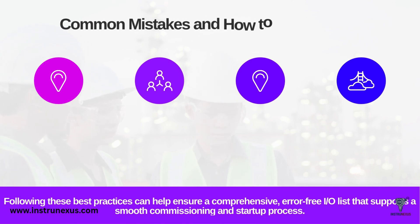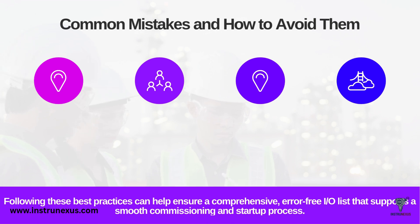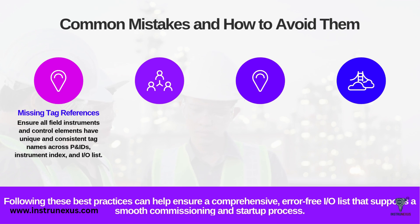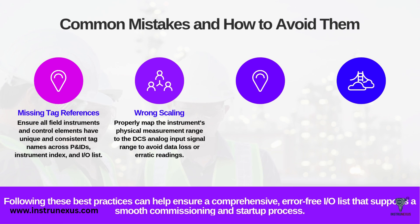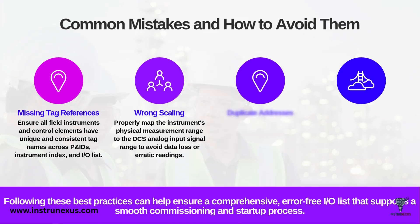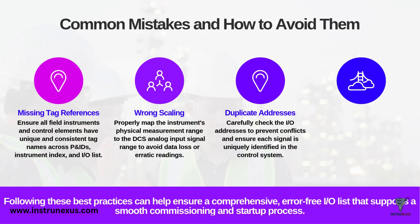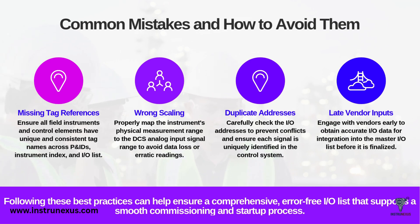Preparing an IO List is a detailed process and several common mistakes can cause major problems down the line. First, missing tag references: a tag exists on the P&ID but is missing from the IO List, or vice versa. The only way to avoid this is to rigorously cross-check all documents. Second, wrong scaling: a classic error where the instrument's physical range is 0-200 PSI but it's entered in the DCS as 0-100, causing the control system to read the wrong value and leading to erratic control and false trips. Third, duplicate addresses: two different IO points assigned to the same physical address, creating a conflict that must be found and fixed. Finally, late vendor inputs: you finalize your list and then vendor data arrives, forcing a major late-stage revision. The solution is to engage with vendors early and demand their IO data before finalizing your own list.